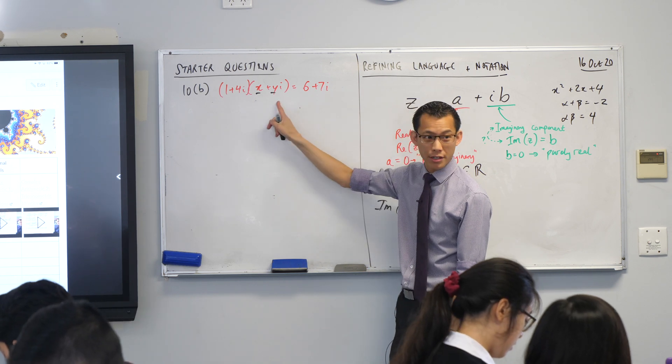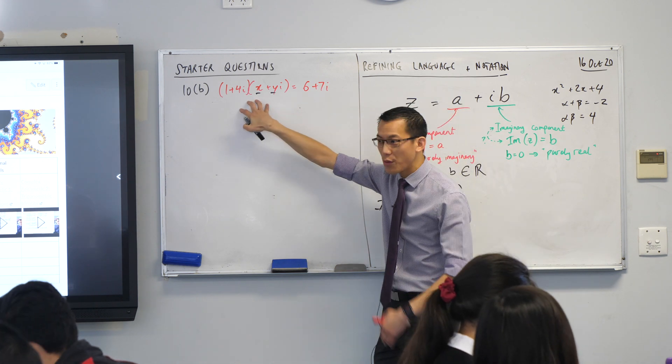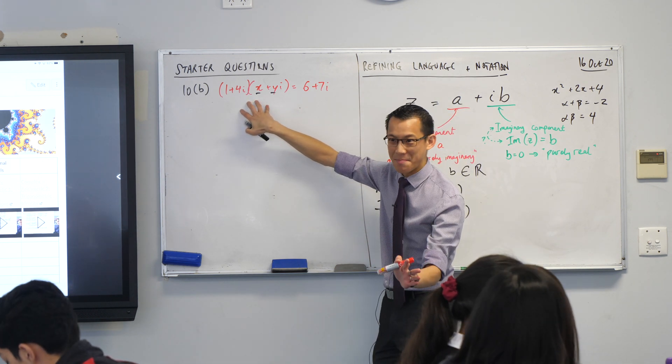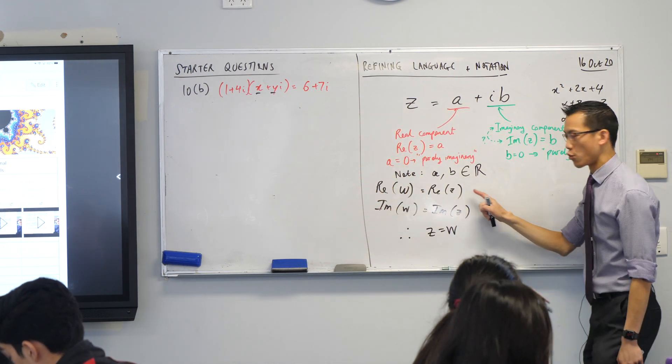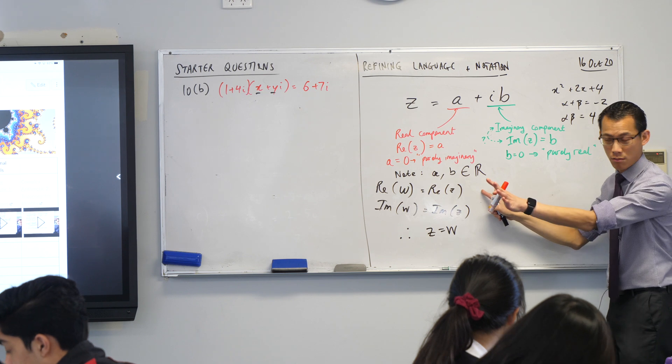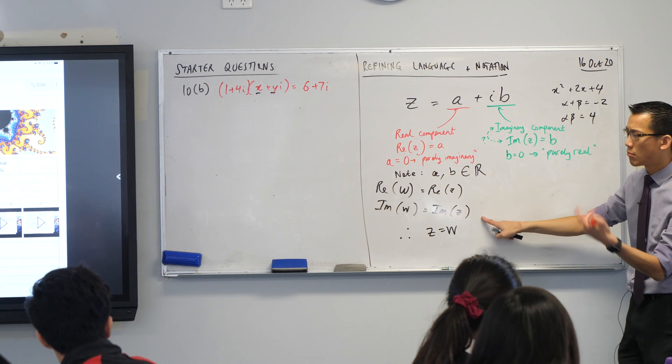If you have a look at this equation, we're saying this thing is a complex number. Over here, once I expand and simplify this mess, will also be a complex number. If I'm saying that they're equal to each other, that means the real components have to be separately equal, and the imaginary components have to be separately equal. Does that make sense? Let's have a go.